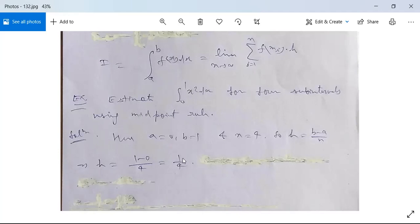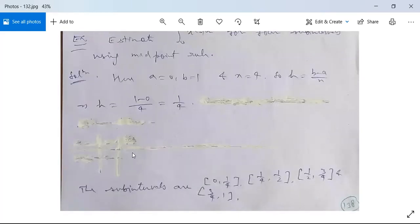So h is given as (b minus a)/n. As per the formula, h equals (1 minus 0)/4, so it is 1/4. We get the value of the width as 1/4. Next, the subintervals will be: first [0, 1/4], second [1/4, 1/2], third [1/2, 3/4], and fourth [3/4, 1]. So we get four subintervals.